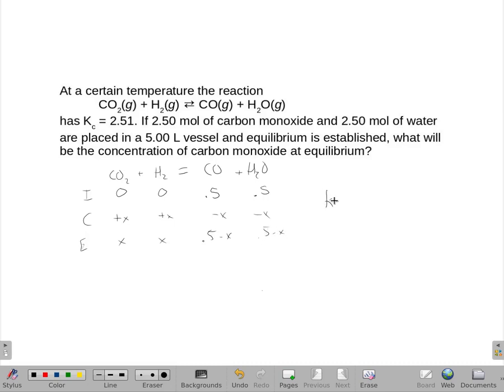So Kc for this equation would have our carbon monoxide and water products on top and the CO2 and the hydrogen on the bottom. So plugging things in, we have 2.51 equals 0.5 minus x and 0.5 minus x, all over x and x.